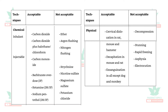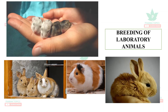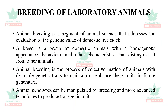From the table: allowed inhalants are carbon dioxide, CO2 plus halothane, and CO2 plus chloroform; not accepted are ether, argon flushing, and nitrogen flushing. Allowed injectable techniques are barbiturates, ketamine, and sodium pentothal; not allowed are strychnine, nicotine sulfate, magnesium sulfate, and potassium chloride. Allowed physical methods are cervical dislocation in rat, mouse, and hamster; decapitation in mouse and rat; and exsanguination in all except dog and monkey. Physical methods not allowed per CPCSEA are stunning, rapid freezing, asphyxia, and electrocution.